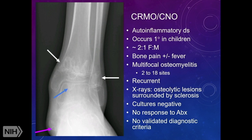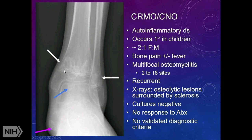They present with bone pain, with or without fever. About 80% to 90% will ultimately develop multifocal bone lesions, although some start with just one spot. It is often recurrent, but can be chronic and persistent. X-rays, when positive, can show the classic look of an osteolytic lesion surrounded by sclerosis, abutting a growth plate — here in the distal tibia, the distal fibula, as well as multiple bones in the feet.